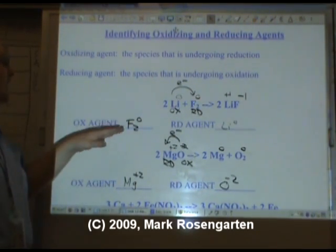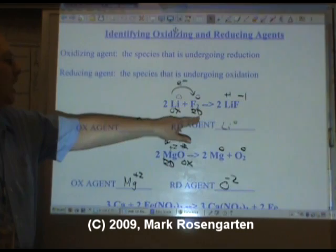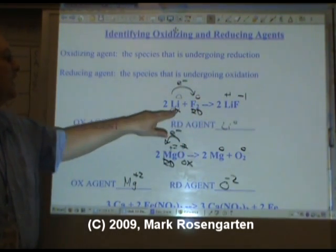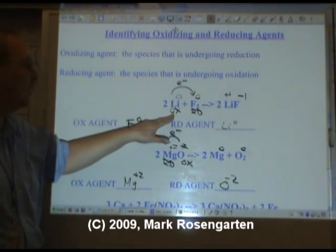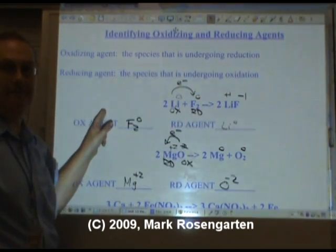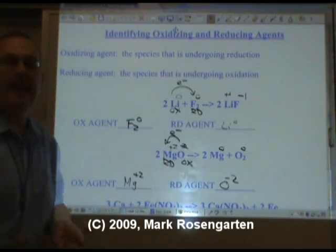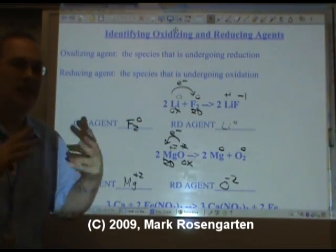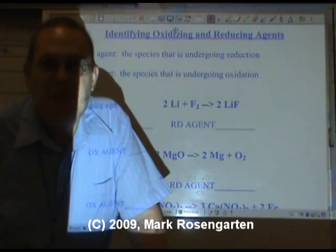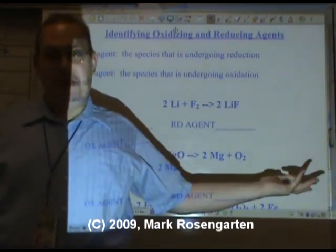So to sum up: the oxidizing agent is the species that undergoes reduction, and the reducing agent is the species that undergoes oxidation. They each cause each other to happen — you can't have one without the other. You can't have oxidation without reduction; it's just not going to work. If you like having peanut butter without marshmallow fluff — what would be the point?